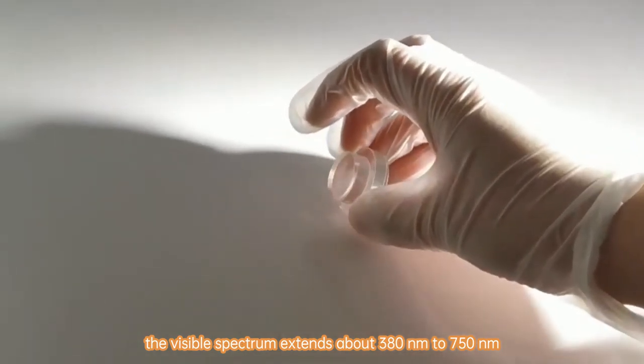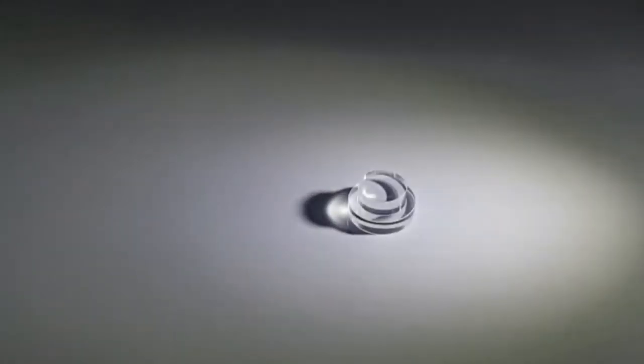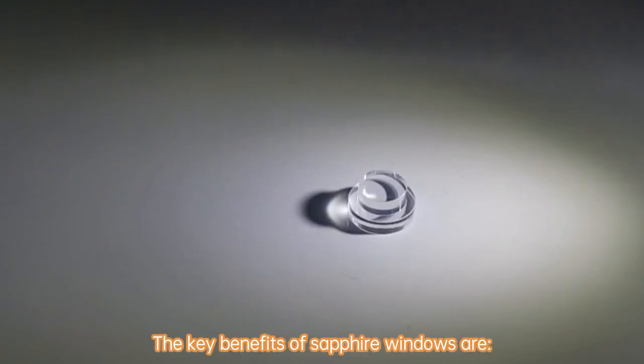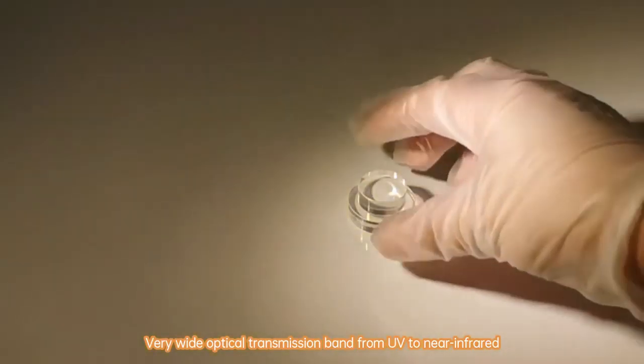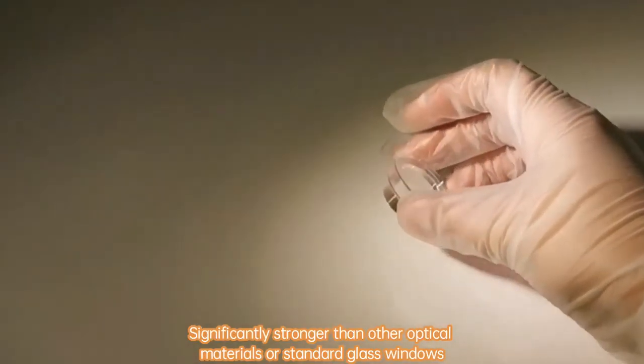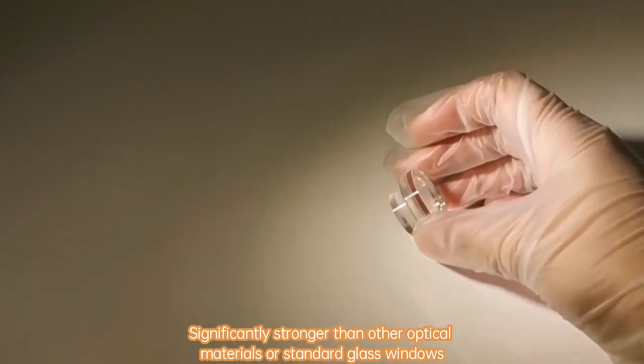The visible spectrum extends about 380 nm to 750 nm, and sapphire is extraordinarily scratch-resistant. The key benefits of sapphire windows are a very wide optical transmission band from UV to near-infrared, and being significantly stronger than other optical materials or standard glass windows.